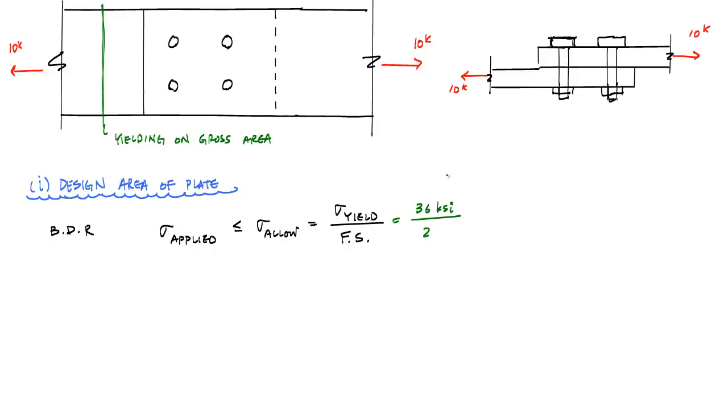And that means that my allowable stress is 18 KSI. For the applied stress side, I want to substitute the constitutive relationship for normal stress, which in this case, for axial loading, is simply the internally applied force, I call that N applied, divided by the area or the cross-sectional area that I need to satisfy this basic design relationship and make this less than or equal to 18 KSI. And now what I'm going to do from statics, I know that this N applied, the normal force applied on this green face here, is 10 kips.